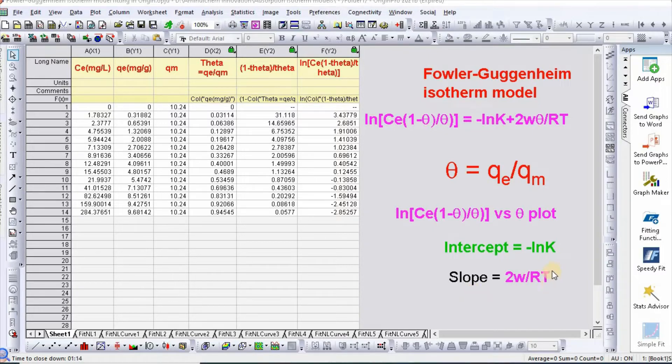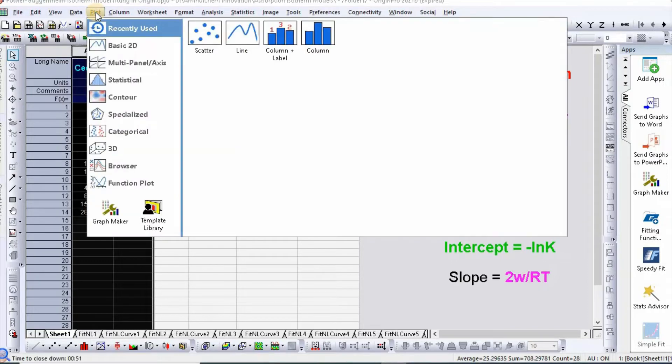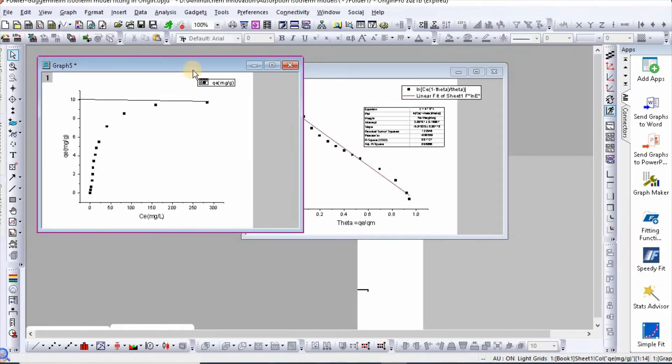In order to fit, I have taken data for equilibrium concentration and amount adsorbed at equilibrium. First we need to determine Qm. Just go to plot and scatter. Then extrapolate this to determine theoretical Qm, which is around 10.2 in this case.